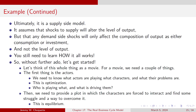Let's think of this whole thing like a movie. For a movie, we need actors playing certain characters — we need to know who they are, what their motivations are, what their problems are. That would be optimization: characters being well-defined with motivations and goals. We also need a plot — a way to get characters from wanting things to either getting them or learning a valuable lesson. That plot has characters interact with each other, and that would be equilibrium.